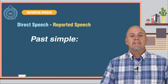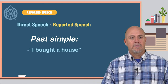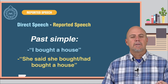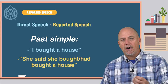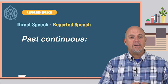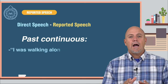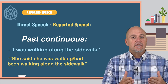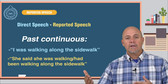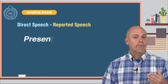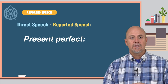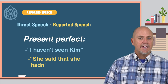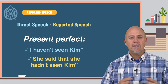Past simple: I bought a house — she said she bought / had bought a house. Past continuous: I was walking along the sidewalk — she said she was walking or had been walking along the sidewalk. Present perfect: I haven't seen Kim — she said that she hadn't seen Kim.